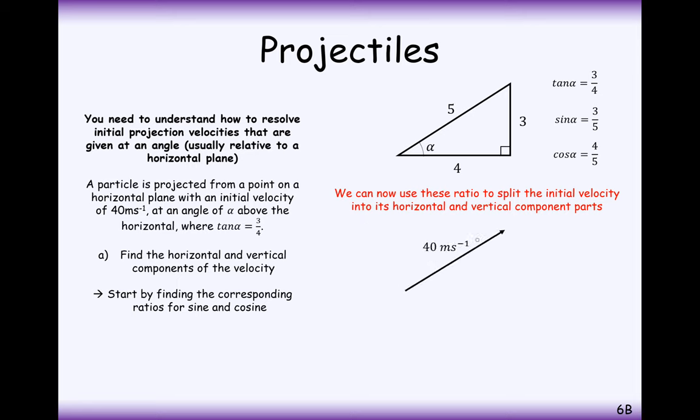We have an initial velocity of 40 meters per second at an angle of alpha where tan of alpha is 3 over 4. So resolving these into vertical and horizontal components, we're going to have 40 cos alpha on the adjacent side and 40 sin alpha on the opposite side of the right angle triangle. So to answer the question, find the horizontal and vertical components of the speed, that's going to be 32 and 24.